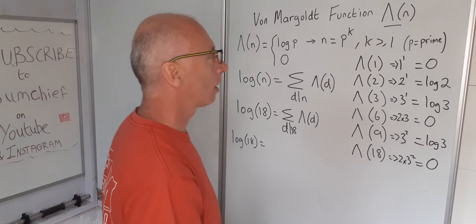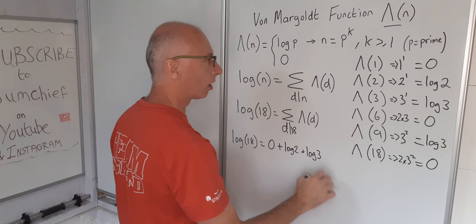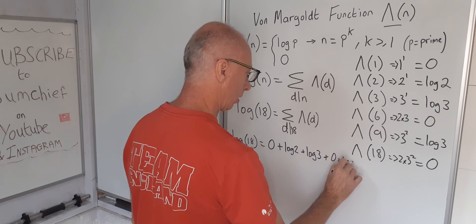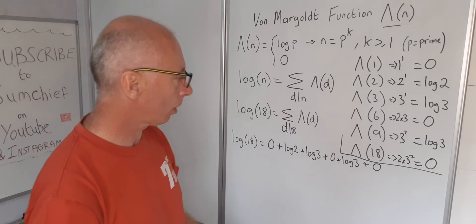Now we're going to sum up all the von Mangoldt function values for the divisors of 18. So we get 0 plus log of 2 plus log of 3 plus 0 plus log of 3 plus 0 plus log of 3 plus 0. Now we do log of 2 plus log of 3 plus log of 3 and so on.